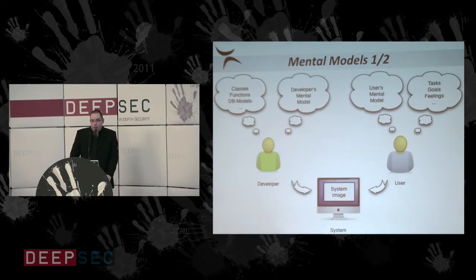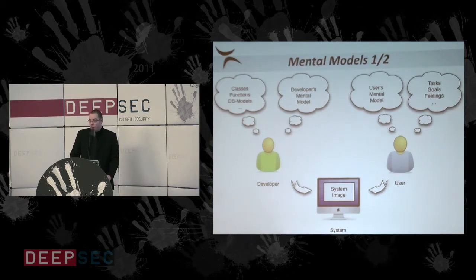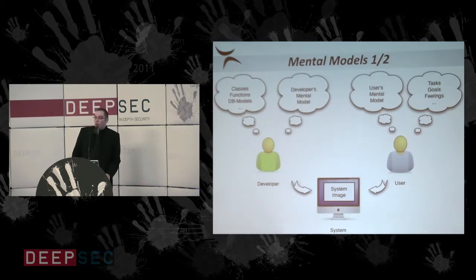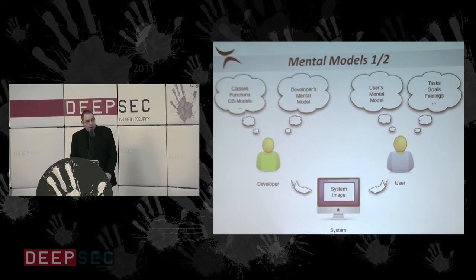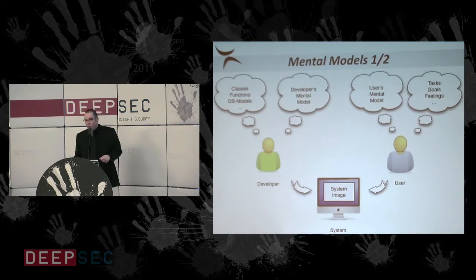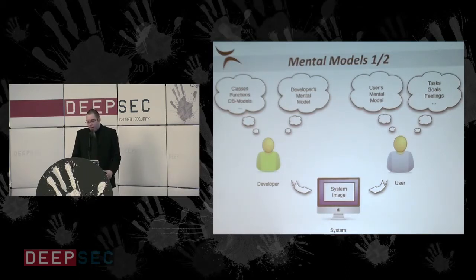What happens when IT security systems are designed? The developer has a mental model of the application they want to build — thinking in classes, functions, and database models. On the other side, the end user has their own mental model constructed from what we call the system image. The developer implements their mental model in the system, but the system only has the graphical user interface and audio interface to explain the developer's mental model to the user. There is no direct connection from the developer's head to the user's head — which would be very convenient, because then users would understand why a button is labeled a certain way, or why it's called HTTPS and not HTTP. The user is thinking in tasks, goals, and feelings — the user does not think in security.